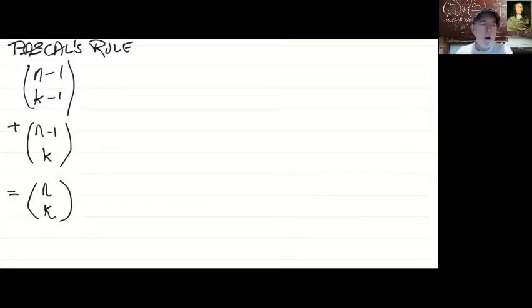Now, here's why I've written them this way. Because I want to break down each of these separate components, each of these separate bits. So I'm going to expand this into the factorial form, n minus 1 factorial all over k minus 1 factorial times n minus 1 minus k minus 1.